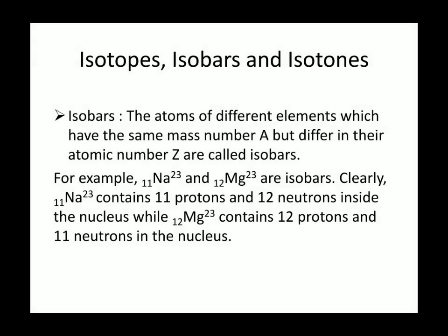Isobars: the atoms of different elements which have the same mass number but differ in the atomic number are called isobars. That is, the nuclei of isobars have different number of protons and different number of neutrons. For example, we take sodium and magnesium, they are isobars. We see that they have the same mass number, but differ in atomic number. Clearly sodium contains 11 protons and 12 neutrons, while magnesium contains 12 protons and 11 neutrons in the nucleus.